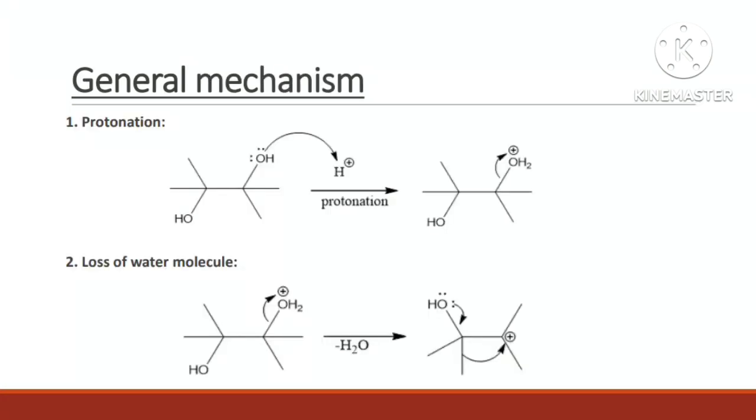The mechanism of pinacol-pinacolone rearrangement reaction takes place in four steps. The first step is protonation. Since the reaction is carried out in the presence of an acid, the hydroxyl group of pinacol is protonated by an acid. In this case, we take a symmetrical vicinal diol, so any one hydroxyl group is protonated by an acid. As a result, we get a species in which oxygen is carrying a positive charge, which is not acceptable for oxygen because it is an electronegative atom.